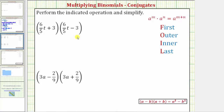Some textbooks do provide a formula when multiplying binomial conjugates shown here below. We're going to go ahead and multiply like we normally do by using repeated distribution. To multiply these two binomials, we need to distribute both terms in the first binomial into the second binomial.